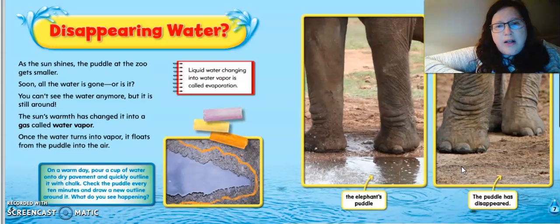That water turns into water vapor, which is a gas. On a warm day, pour a cup of water onto the pavement and quickly outline it with chalk. So this is a cool experiment to do on a warm day. Check the puddle every 10 minutes and draw a new outline around it. What do you see happening? Liquid water changing into water vapor is called evaporation. So when this water starts to disappear or turn into water vapor, we call that evaporation. It evaporates.